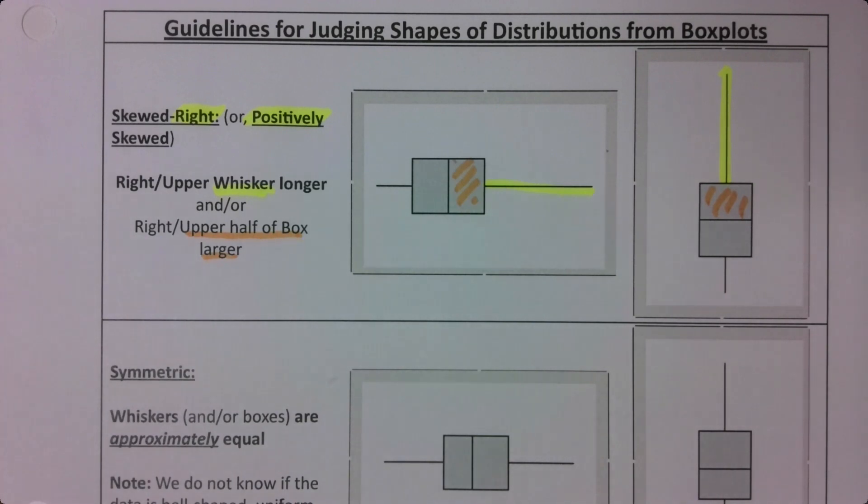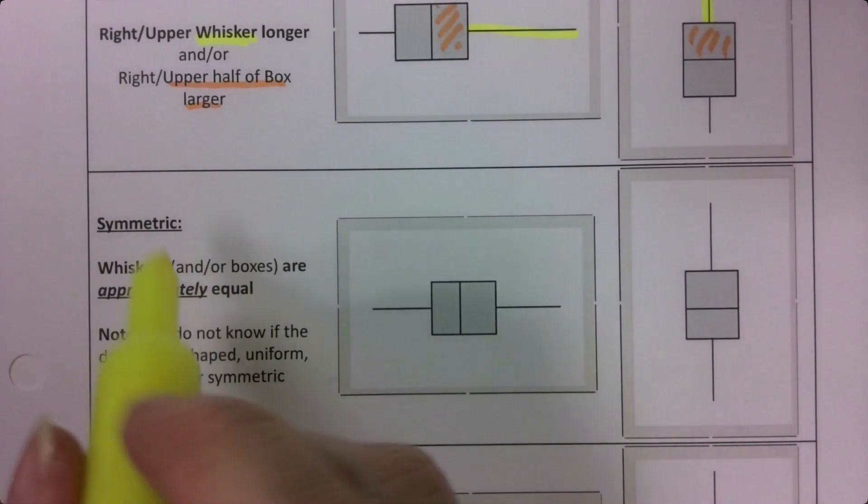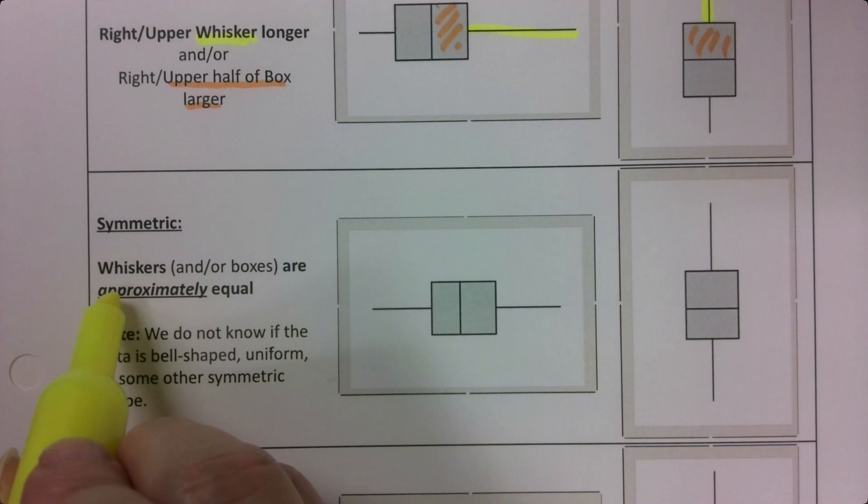Then what about symmetric? Well, if the whiskers are approximately equal. So look at your whiskers. If they're approximately equal.